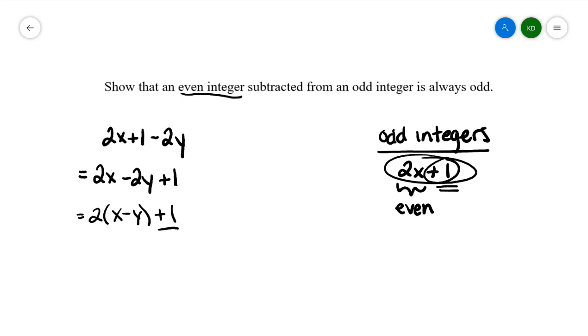You have the plus 1. You have 2 multiplied by something. And this is pretty much enough. So we can say therefore the difference will always be odd.